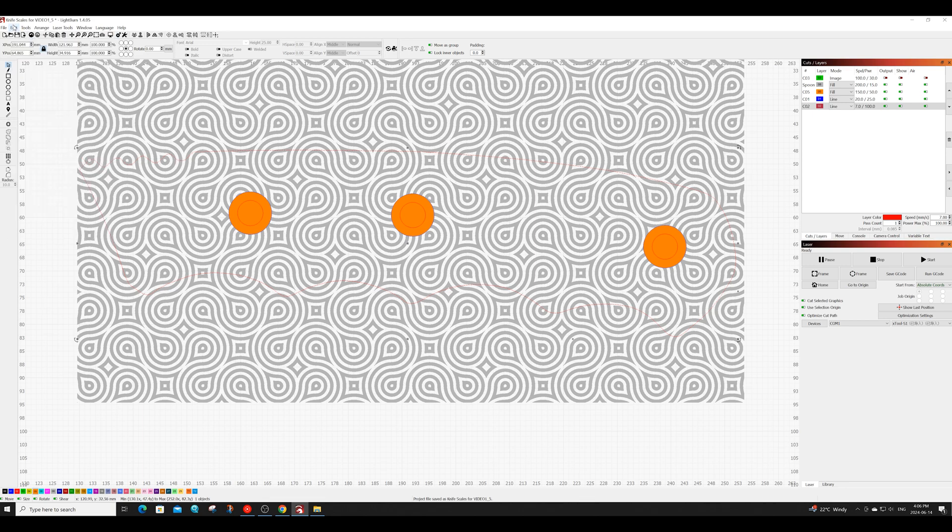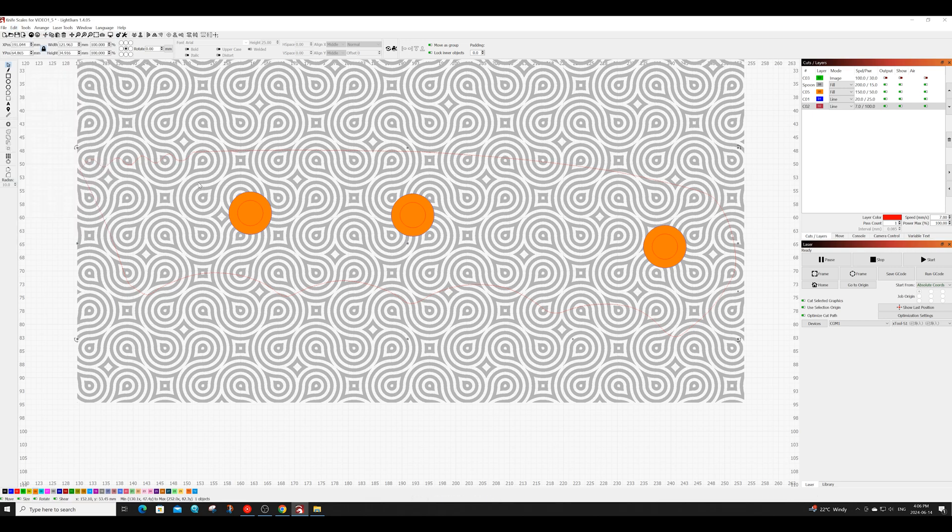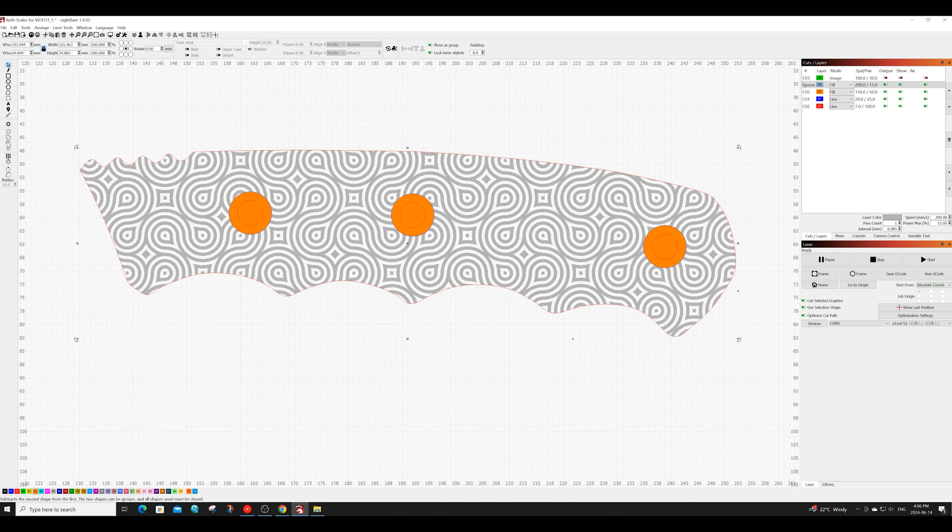Once you have your pattern sitting the way you like on the knife scale, the next thing you want to do is make a copy of the outline of the scale. Now making sure to select both the outline you just made and the pattern, click on the boolean subtract option in the menu and you will now get a perfect crop of the pattern inside your knife scale.